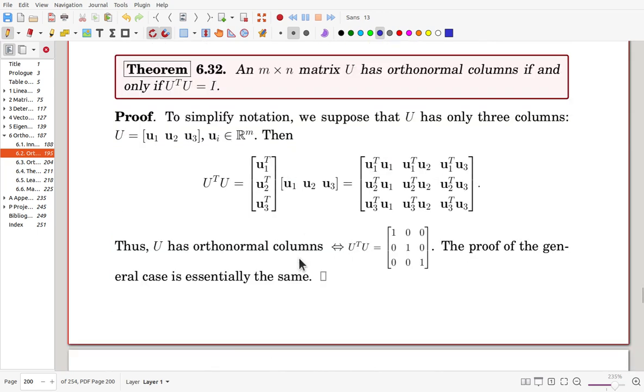An n by n matrix U has orthonormal columns if and only if U transpose U equals identity. We can prove the theorem quite easily. For simplicity, we start with the case U has only three columns. Here, expressly U is [u1, u2, u3].